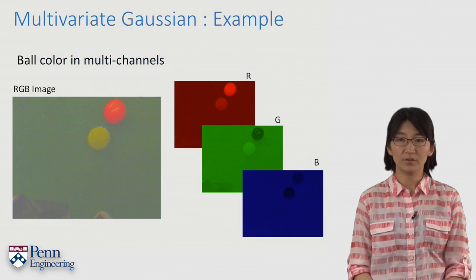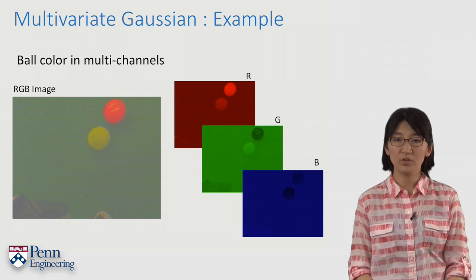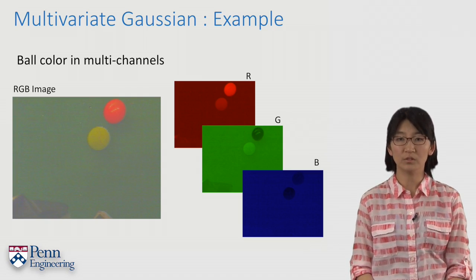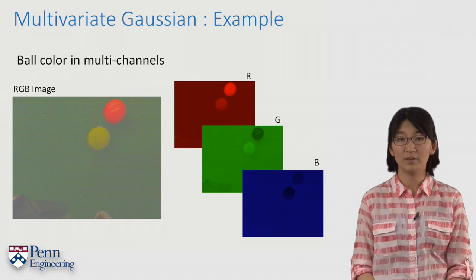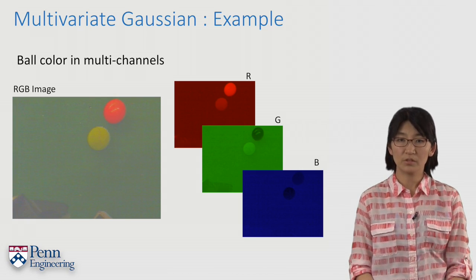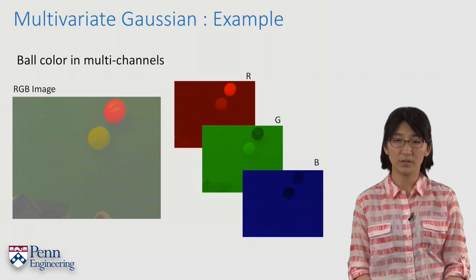Let's consider the previous ball color example. In the 1D example, we used a single property called hue. The color itself can be described in many dimensions. For example, color images are typically defined by three color channels of red, green, and blue.